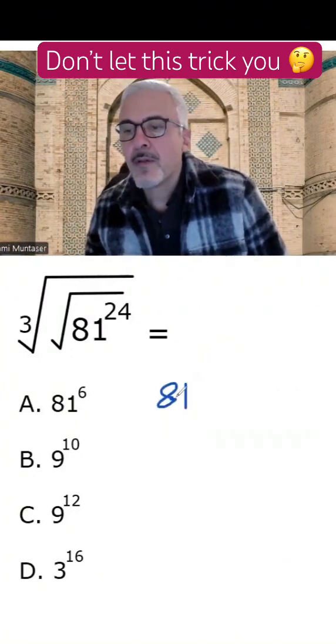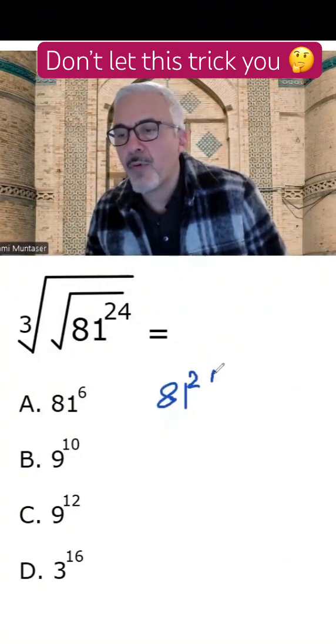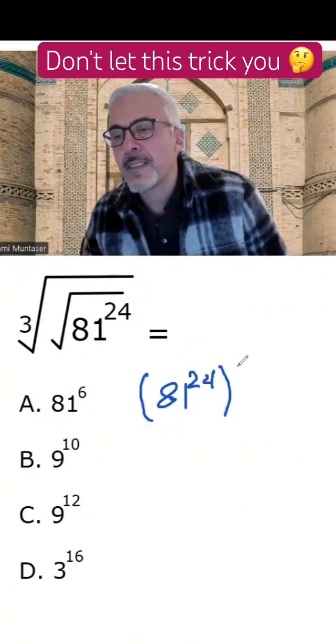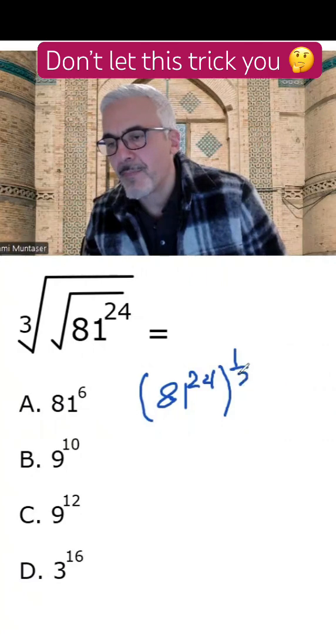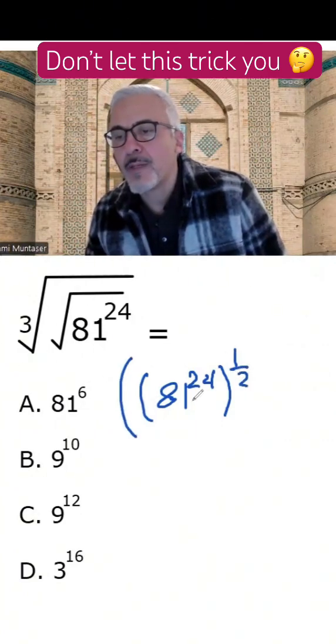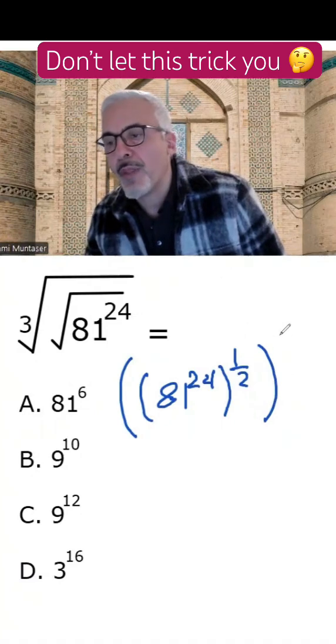So we have 81 to the power of 24. And the square root is the same as to the power of 1 half. And then we have the cube root. Everything in the cube root means to the power of 1 third.